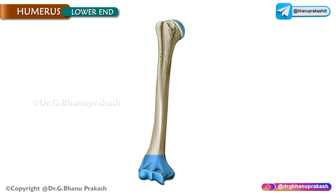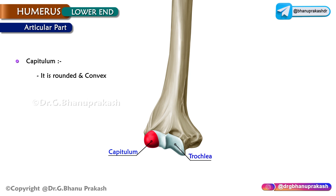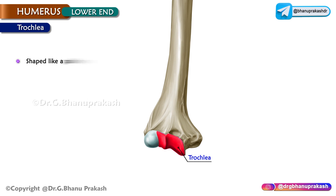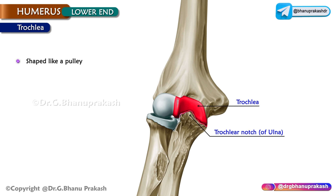The lower end is broad from side to side and consists of an articular and non-articular part. The articular part includes the capitulum, which is rounded and convex, lying lateral to the trochlea and medial to the lateral epicondyle. It articulates with the head of the radius and is covered in hyaline cartilage. The trochlea is shaped like a pulley and lies medial to the capitulum; it articulates with the trochlear notch of the ulna.